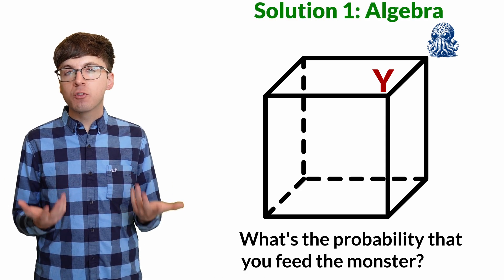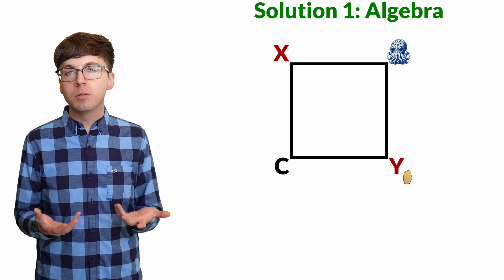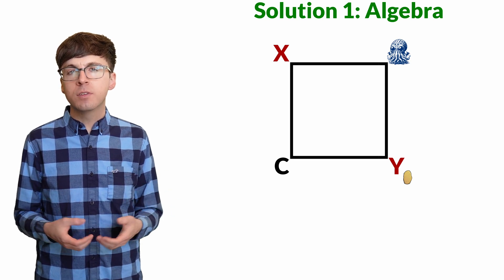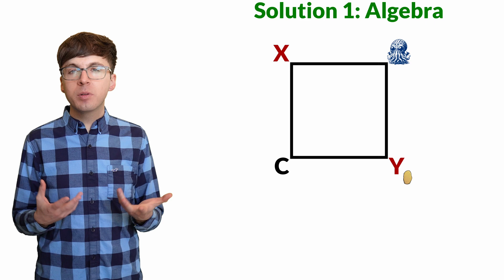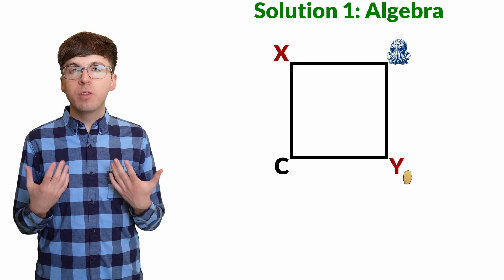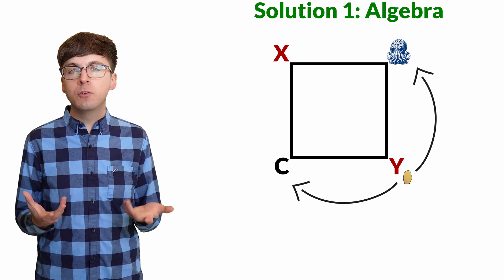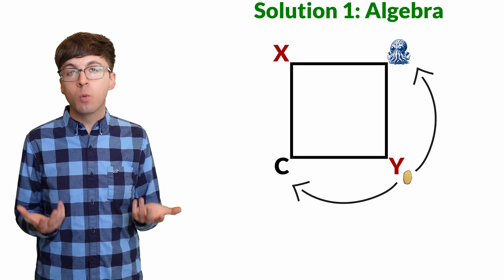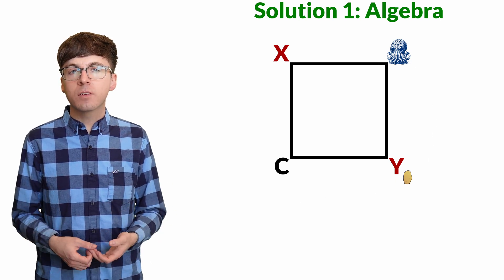To get an idea how the algebraic solution works, let's start with a simpler problem where only the top four vertices are included. Now we're playing the game on a square, and we throw the potato to one of the adjacent two vertices with probability one-half. What's the probability we feed the monster?